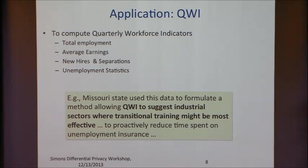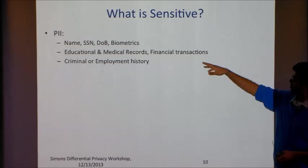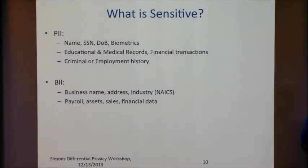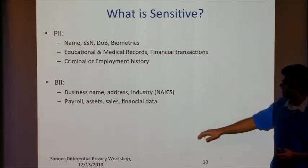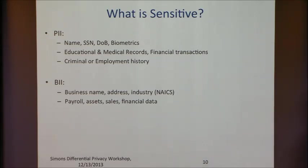These are used for various policy decisions — for instance, figuring out where to create transitional training programs. It's fairly important data that needs to be reasonably accurate. What is sensitive? There are individuals, so standard PIIs, but also educational, medical, and financial data. Business information also needs to be kept secret — the census gets payroll and employee counts through voluntary disclosure from businesses. If census does not protect business privacy, businesses may no longer provide the data.